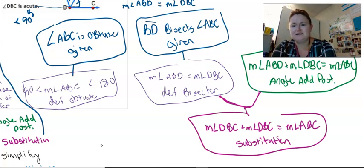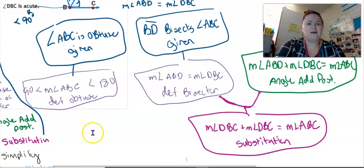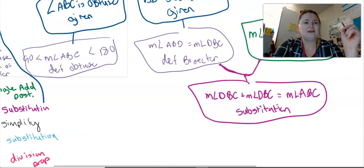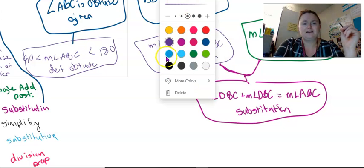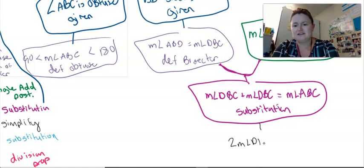This is because of substitution, right? This is the part of proofs that tends to trip people up. I have to say every little thing. So this now is going to flow directly into the thought that the measure of angle DBC. Now I can do simplify. Two times the measure of angle DBC equals the measure of angle ABC. So that's by simplifying.